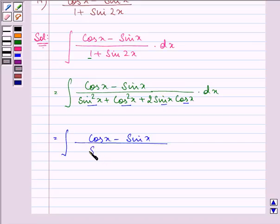So it can be written as sin x plus cos x, the whole square into dx.